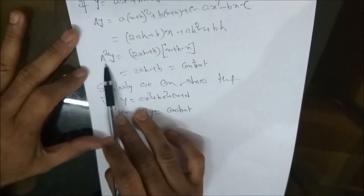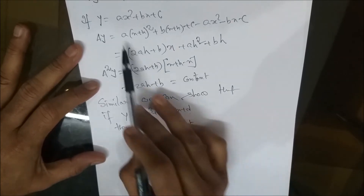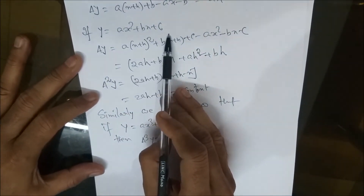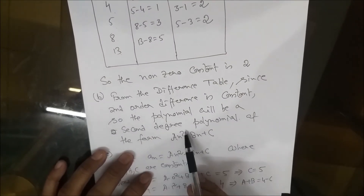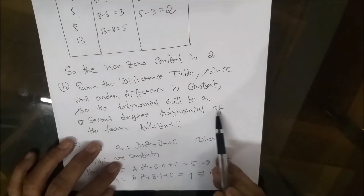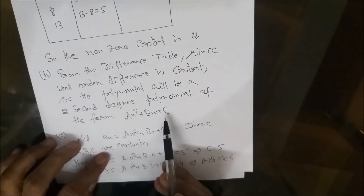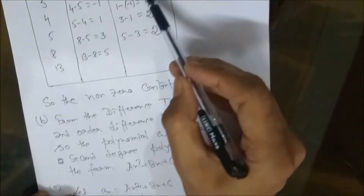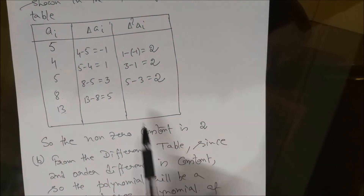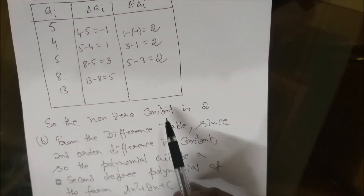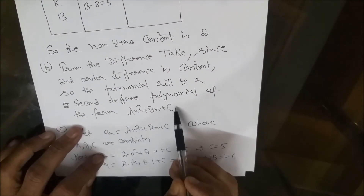Since the second order difference is constant, we have already shown that this implies it will be a second degree polynomial. So the closed form of the sequence will be of the form a·n² + b·n + c.